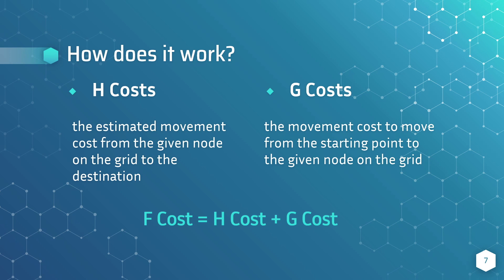However, there were numerous ways to estimate the h-cost, and the options we had are the Manhattan distance, Diagonal distance, and Euclidean distance.